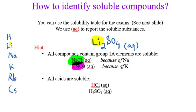Group number 1 elements include hydrogen. So if you have hydrogen at the beginning of a formula, we call that an acid. So all acids are soluble. This rule is the same as the first rule, but we focus on acids and say all acids are soluble because hydrogen is in group 1. So if you see HCl or H2SO4, you just write (aq) — they are water soluble.